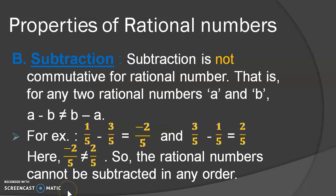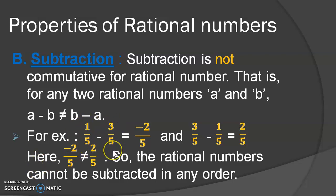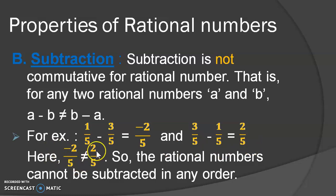Now in the case of subtraction, for any two rational numbers A and B, A minus B is not equal to B minus A. For example, if we perform 1 upon 5 minus 3 upon 5, the answer will be minus 2 upon 5. But when we perform 3 upon 5 minus 1 upon 5, we will get 2 upon 5. Here it is minus 2 upon 5, which is a negative rational number — it is definitely not equal to 2 upon 5. That means both answers are not the same. Hence, subtraction is not commutative for rational numbers.